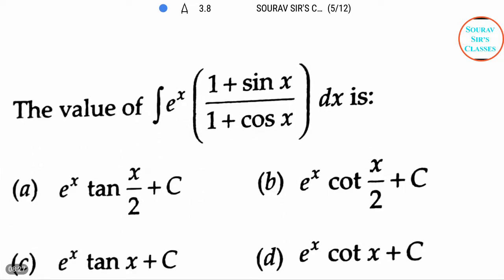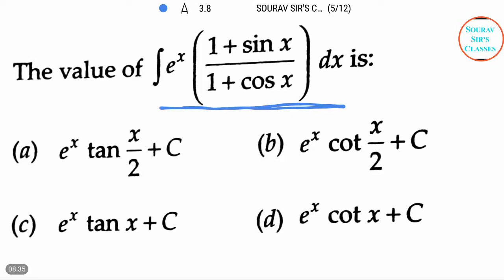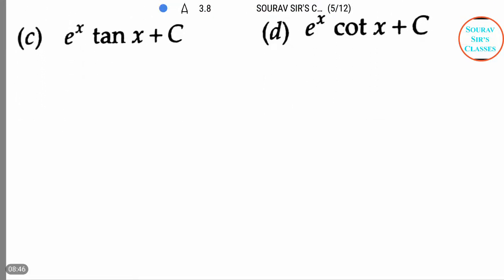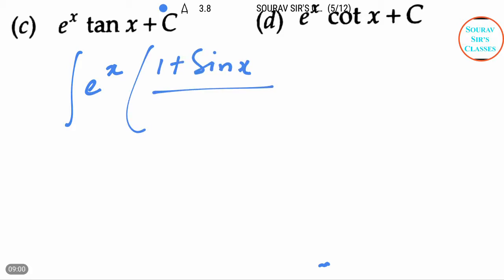Now here is our next question. The question is integration of eˣ into (1 plus sin x) by (1 plus cos x) dx, and again four options are given. So at first let's solve this integration. Our integration term is integration of eˣ (1 plus sin x) divided by (1 plus cos x) dx. Let us assume the whole part is I.